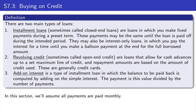A third type that we sometimes talk about, even though it is also a type of installment loan, is an add-on interest loan. Add-on interest is designed a little bit differently in that it comes from simple interest. You compute the simple interest at the end of the term, take the total amount you would owe plus interest, and divide by the number of payments that you're going to be making.